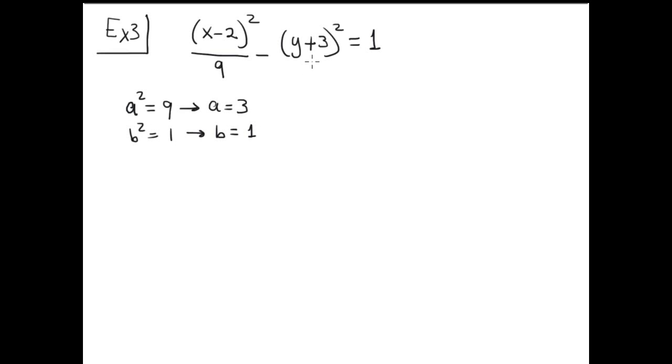I can see also that the hyperbola has the transverse axis parallel to X axis, because the positive term is located in the X axis. C squared is A squared plus B squared. This is 9 plus 1 is 10, therefore C is square root 10. Square root 10 is approximately 3.16.